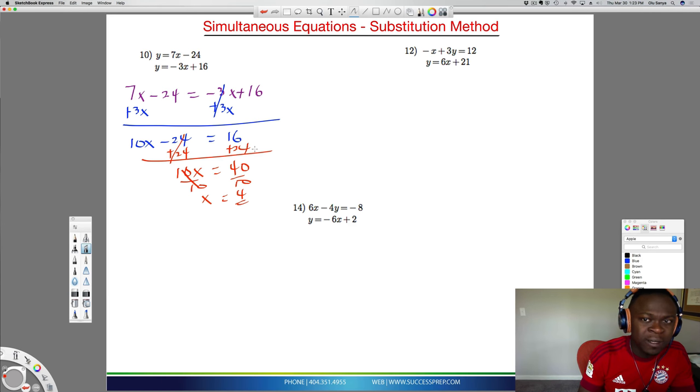The moment you find x as 4, finding the y is not that difficult because all you have to do now is just plug this 4 into any one of these equations. I'm going to plug it into the first one, which is y equal to 7 times 4 minus 24. We know that 7 times 4 is 28, minus 24, that's 4. So your y is also 4. We just solved for the x and y using the substitution method.